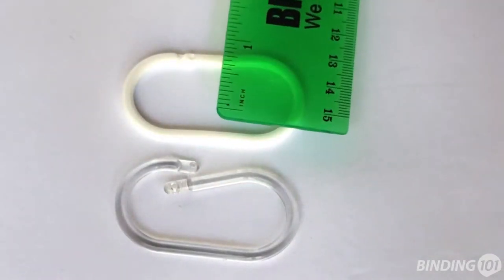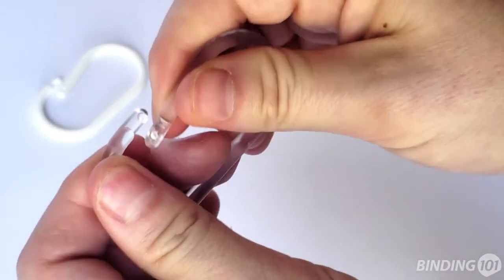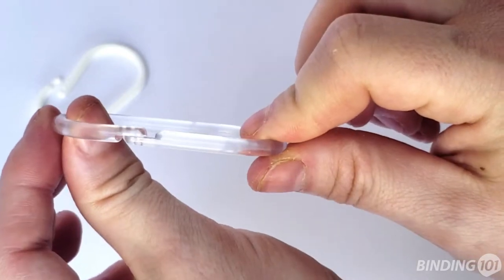They measure 2 inches long and just under 1 inch wide. They have a peg and hole closure that creates a secure bind that is still easy to open and edit as needed.